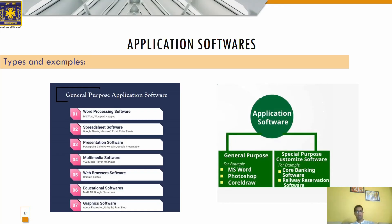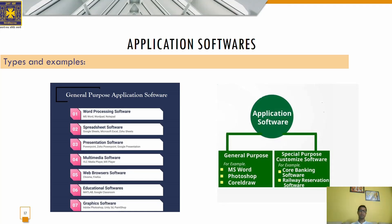Graphics software is used to make changes in visual data, images, and animations, and comprises different editorial tools. Some examples are Adobe Photoshop and PaintShop. For example, I created a PowerPoint presentation, recorded my video, and then merged that video and audio with the presentation to produce a merged version of an audio-visual presentation — and this can be done only by using graphical software.